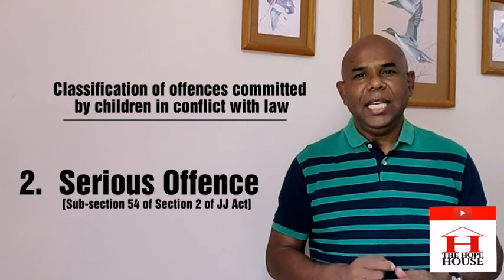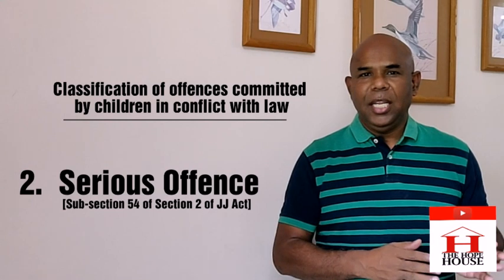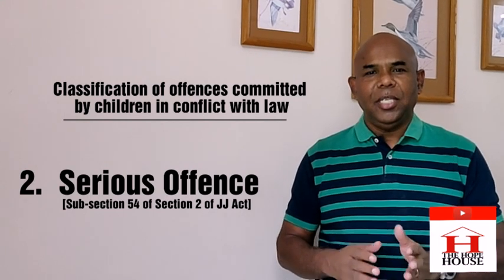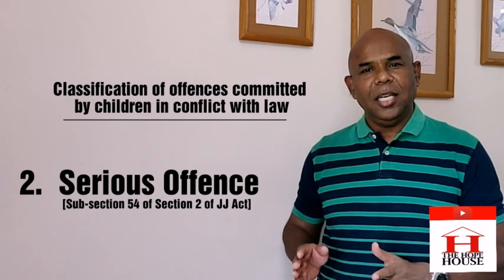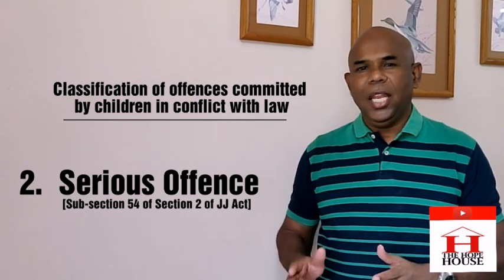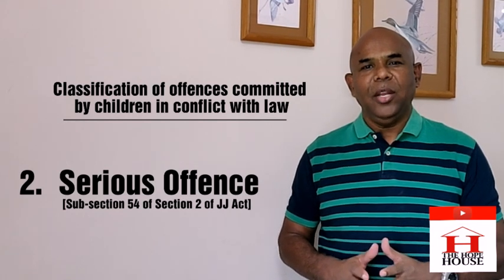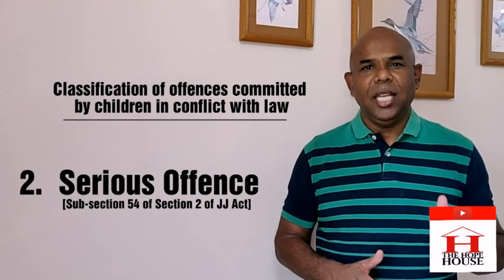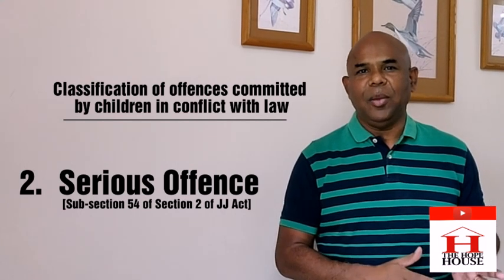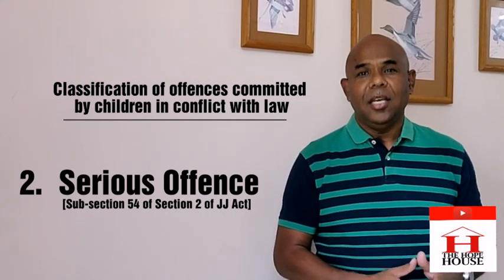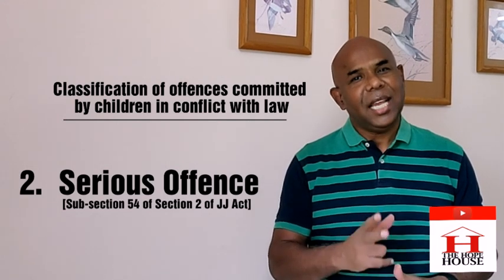The second offense is called a serious offense. Similarly, if an adult commits a crime and subjects that adult under the Indian Penal Code or any other Indian act to imprisonment anywhere between three years and seven years, and if the similar kind of crime is committed by a child, that would be considered a serious crime.